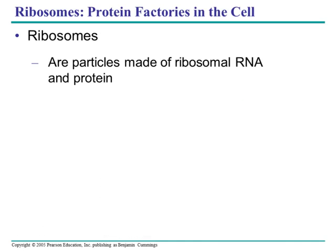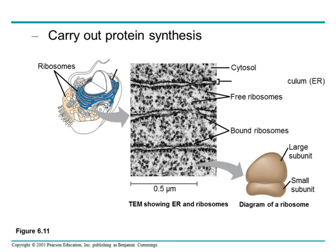Ribosomes themselves are made of two things: rRNA or ribosomal RNA, and protein. They are not wrapped in a membrane like other organelles, and they are conserved in prokaryotic and eukaryotic cells. They carry out protein synthesis, and we'll show how the large subunit and small subunit read the messenger RNA or mRNA. Some ribosomes are free, floating around in the cytosol, and some are bound ribosomes. Bound ribosomes are bound to the endoplasmic reticulum, and the proteins they make go into the ER, then to the Golgi, and out of the cell — destined for the endomembrane system. Free ribosomes make proteins for that one cell where the ribosomes are, so they stay home so to speak.